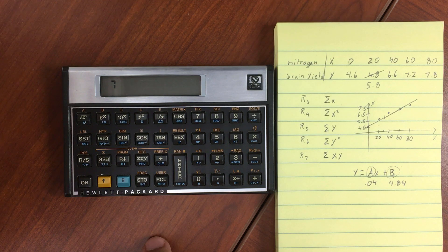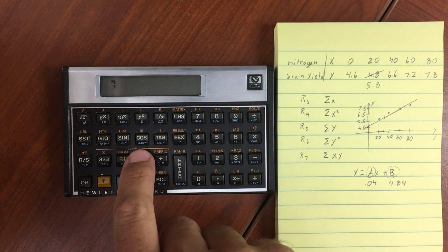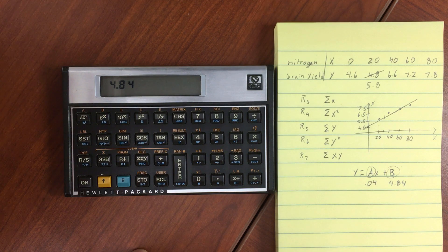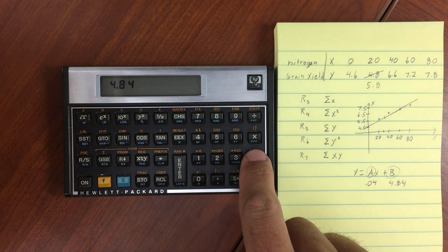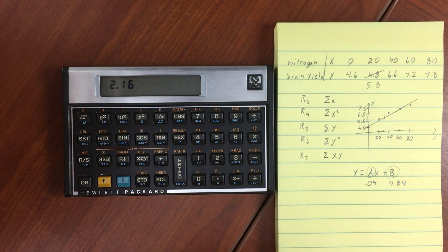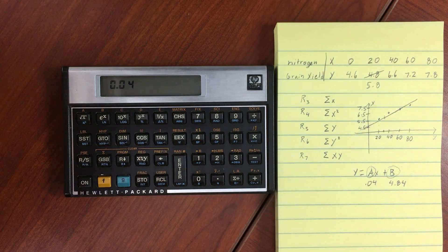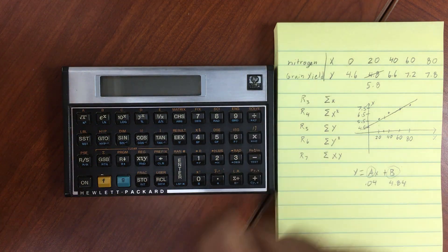Then we're going to do a swap between X and Y. We're going to subtract the two. Swap X and Y again, and then divide.